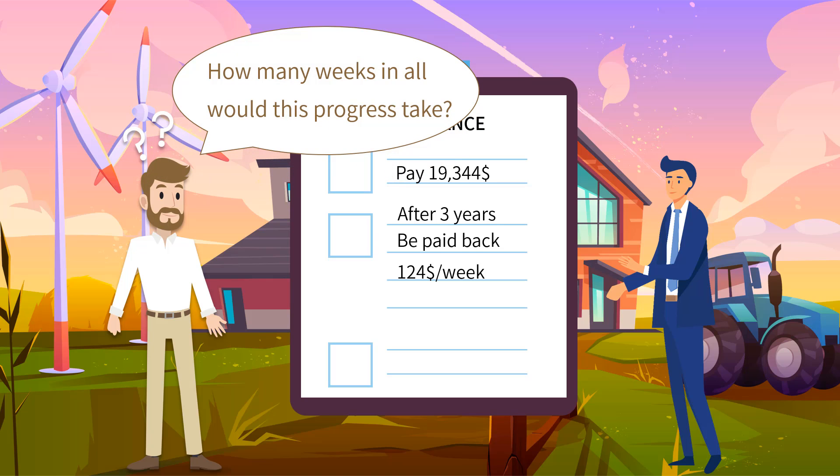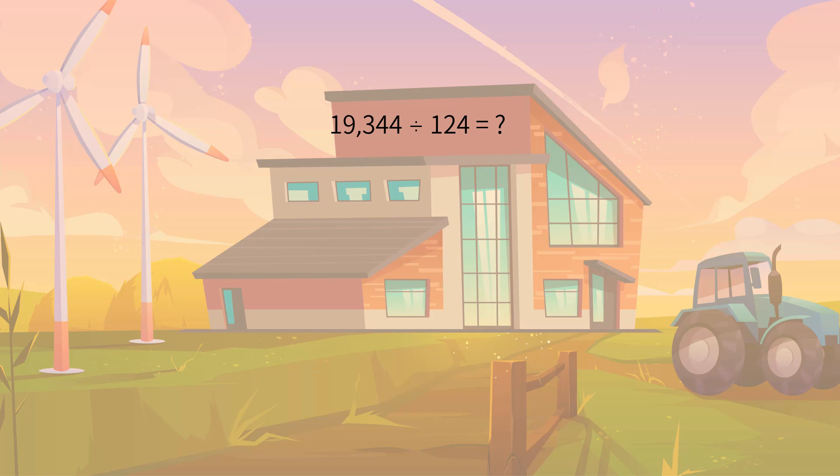Uncle Josh tried to calculate. Let's help him. By taking a look at the dividend and divisor, we would find this is a division with a multi-digit divisor. To calculate 19,344 divided by 124, we take steps similar to what we have done to division with two-digit divisors. Since the divisor turned to three digits, we also need to compare the first three digits of the dividend to the divisor rather than two.